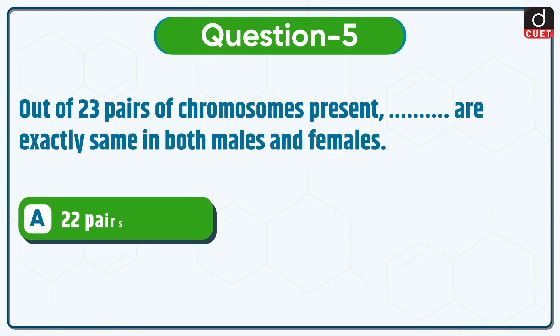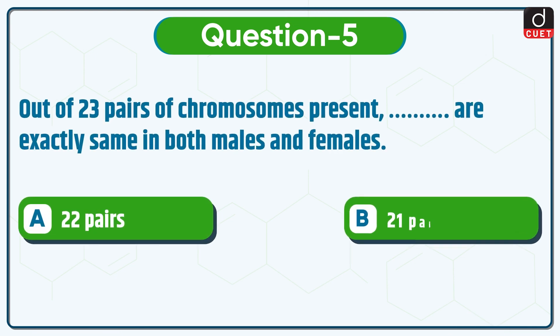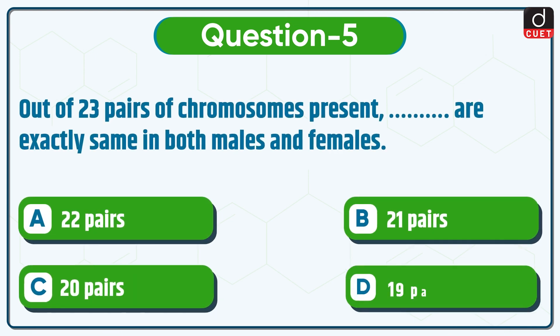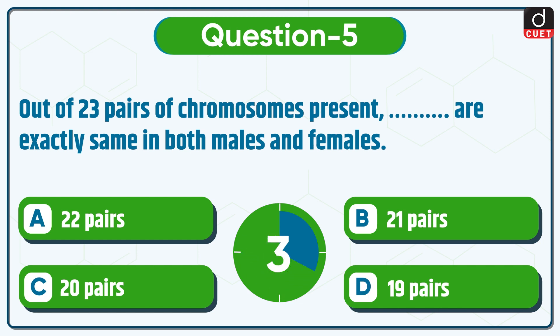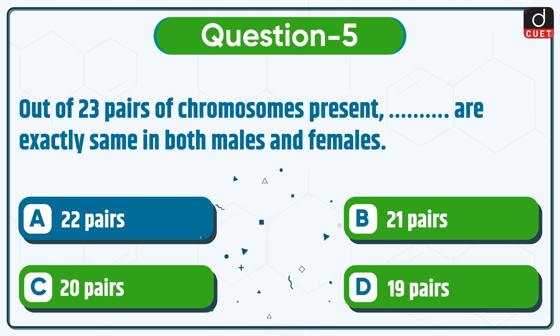Next question is: out of 23 pairs of chromosomes present, how many pairs are exactly the same in both males and females? 22 pairs, 21 pairs, 20 pairs, or 19 pairs? The correct answer is option A, 22 pairs.